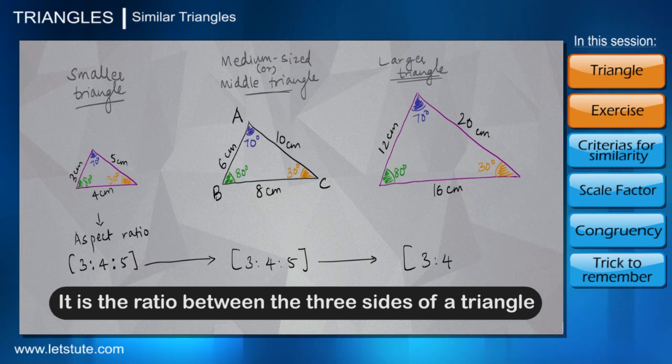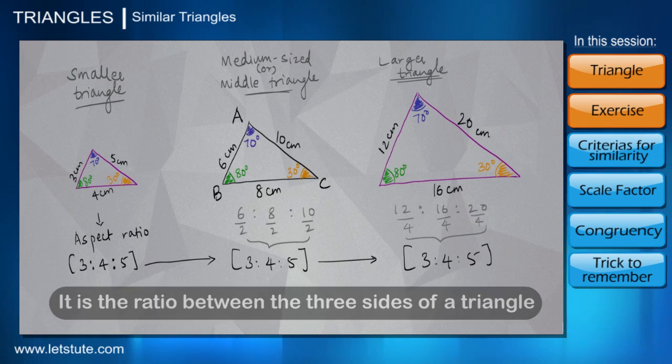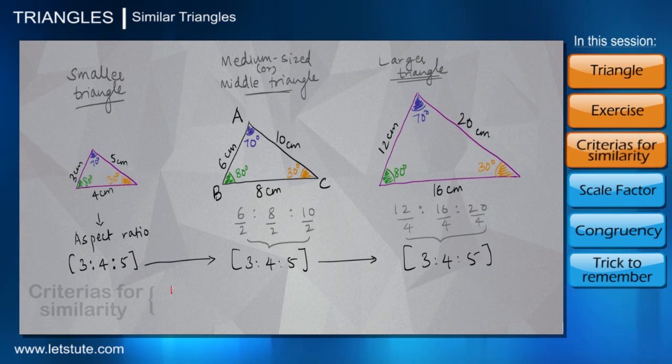So 3 is to 4 is to 5 is the ratio that we will maintain in all of these triangles. 6 is to 8 is to 10 will again give us 3 is to 4 is to 5 if we divide it by 2. Similarly, 12 is to 16 is to 20 will also give us 3 is to 4 is to 5 if we further divide by 4.